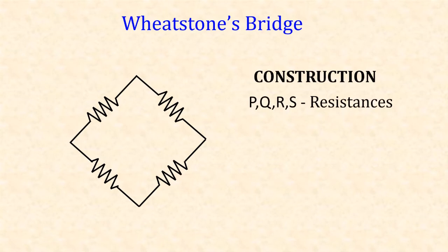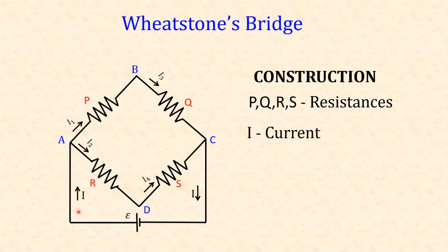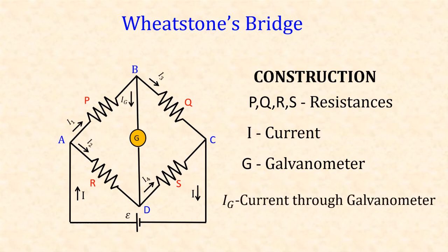In the Wheatstone's bridge there are four resistances P, Q, R, S and they are constructed as a network. A battery of EMF psi is connected between A and C. I is the current flowing through the circuit. This current I is being split into I1, I2, I3 and I4. A galvanometer is bridged between B and D. G is the galvanometer and IG is the current passing through the galvanometer.